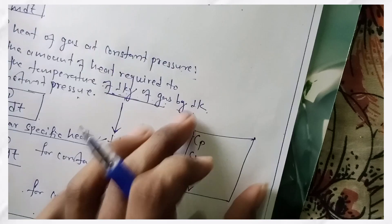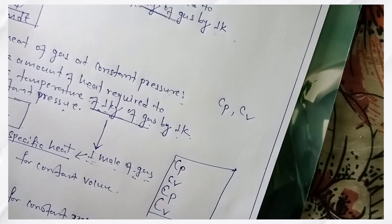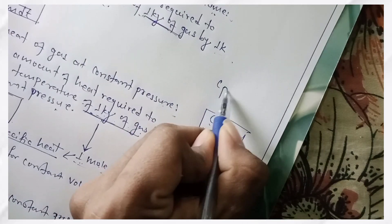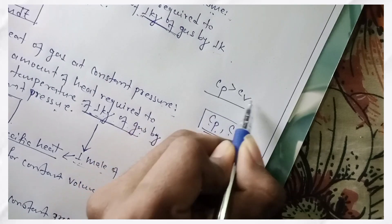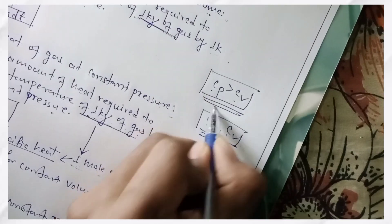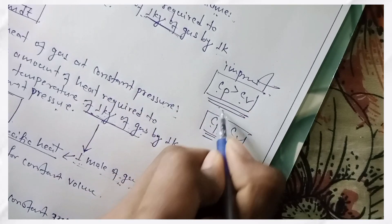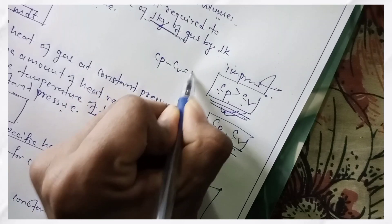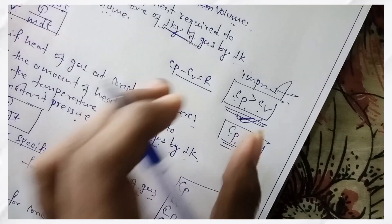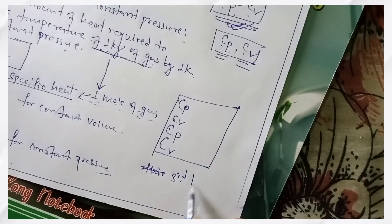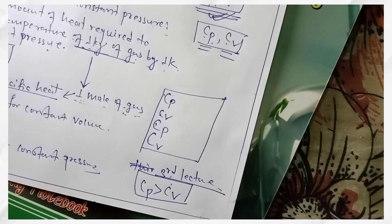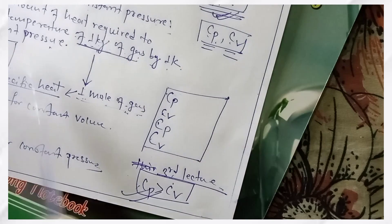Cp is always greater than Cv. This is an important exam point. Also important: Cp minus Cv is a key relationship. This is from the first chapter of Thermodynamics — the first law of Thermodynamics.